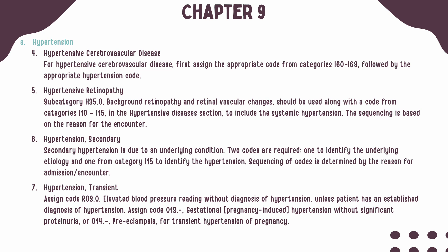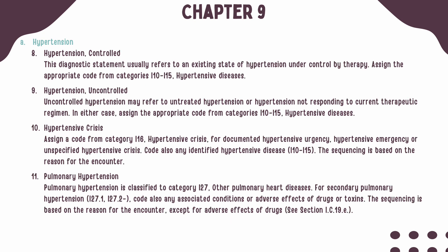If gestational hypertension is present, a code from Category O-13 should be reported. If preeclampsia is documented, a code from Category O-14 should be reported. When hypertension controlled is documented, this typically refers to an existing diagnosis of hypertension under control with medication, and a code from Categories I-10 through I-15 should be reported. When hypertension uncontrolled is documented, referring to hypertension that is untreated or not responding to a therapeutic regimen, a code from Categories I-10 through I-15 should also be reported.